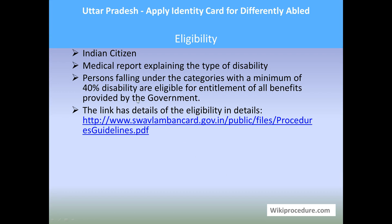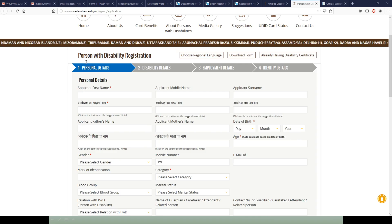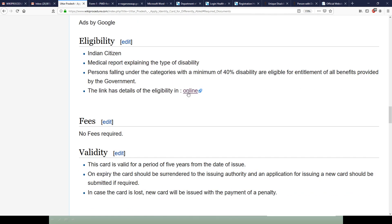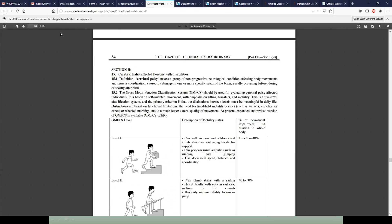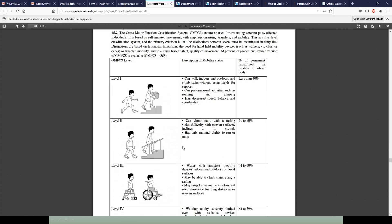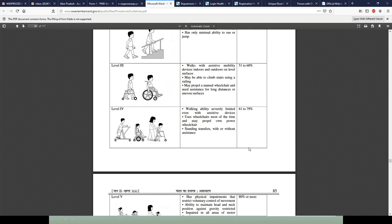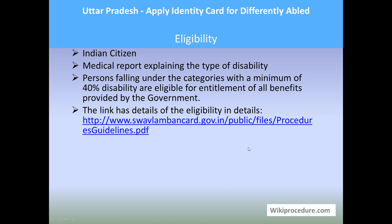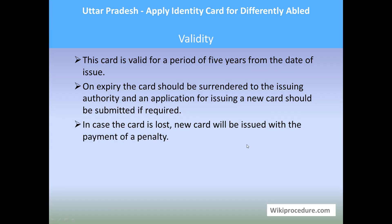Regarding eligibility: Indian citizens are eligible. Persons with medical reports explaining the type of disability are eligible. Persons falling under the identified categories with a minimum of 40% disability are eligible for entitlement of all benefits provided by the government. For details on the percentage applicable to each disability condition, a PDF link is available on our page under the Eligibility section — particularly page 84, which lists different disability conditions and their applicable percentages.